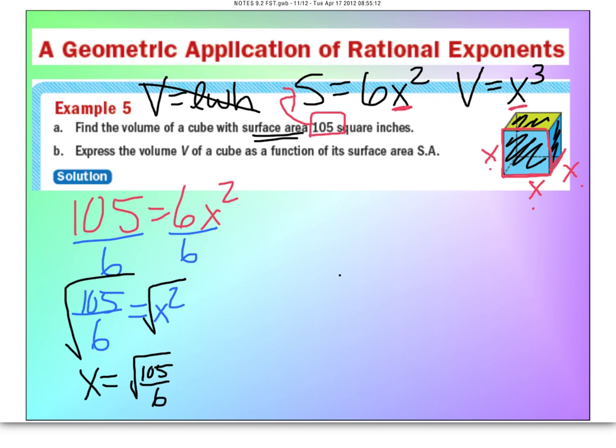Now, what I'm going to do is take this value of x that we just found, and we need to take that and put it into here for x so we can find the volume. So let's finish the problem. Volume, therefore, is equal to the square root of 105 over 6, all cubed.